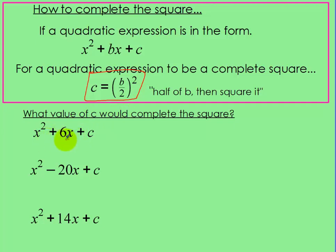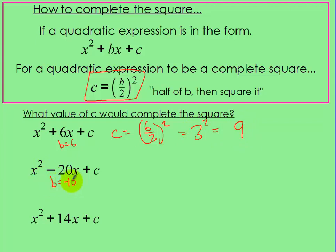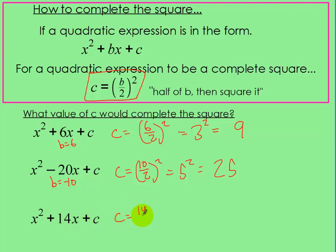For example, on that 6x, our b value is 6. So c equals 6 divided by 2, squared — that's 3 squared, which is 9. For b equals negative 10, the negative part doesn't matter because it always comes out positive, so it's 10 over 2 squared, which is 5 squared, which is 25. For 14x plus c, c equals 14 divided by 2 squared, which is 7 squared, which is 49. So that's what you need to complete the square.